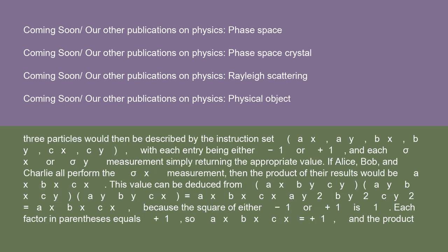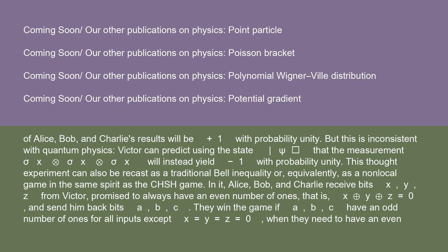Then each particle contains an instruction set that determines the outcome of a σx or σy measurement upon it. The set of all three particles would be described by the instruction set {ax, ay, bx, by, cx, cy}, with each entry being either minus one or plus one. If Alice, Bob, and Charlie all performed the σx measurement, then the product of their results would be ax·bx·cx. This value can be deduced from (ax·by·cy)(ay·bx·cy)(ay·by·cx) = ax·bx·cx·(ay²·by²·cy²) = ax·bx·cx, because the square of either minus one or plus one is one. Each factor in parentheses equals plus one, so ax·bx·cx equals plus one, and the product of Alice, Bob, and Charlie's results will be plus one with probability unity.